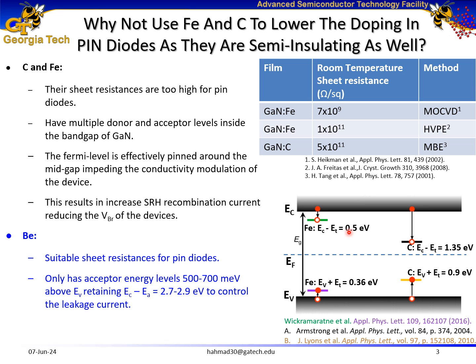On the other hand, I'm going to show later that beryllium has suitable sheet resistances for PIN diodes. It has been shown that beryllium only has acceptor levels inside the band gap of gallium nitride, so we would still have a significant portion of the semiconductor to control the leakage current.